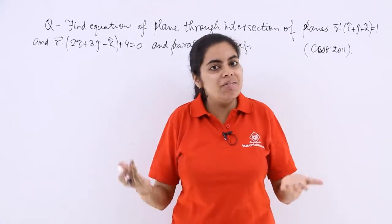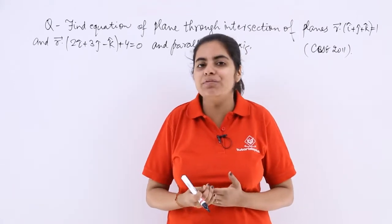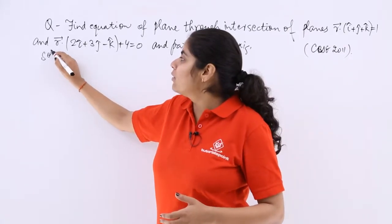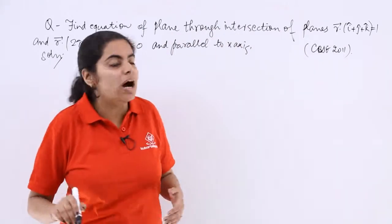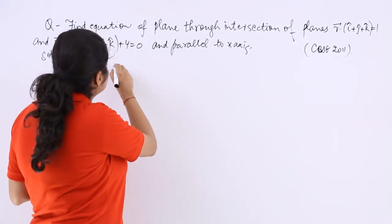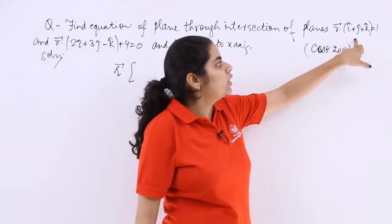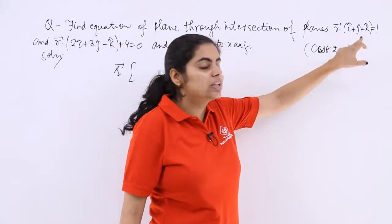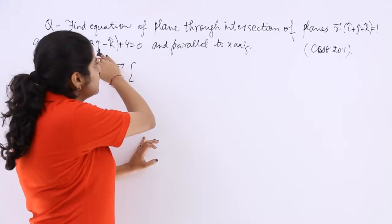First of all we have intersection, so we're going to follow the lambda method. How to find the required equation from here? You have the first equation and here r dot n equals d. This is n1, this is n2.